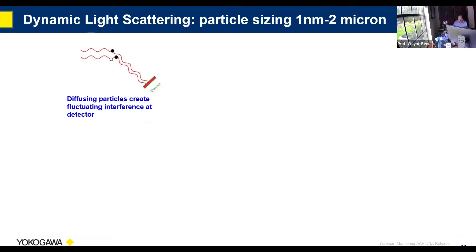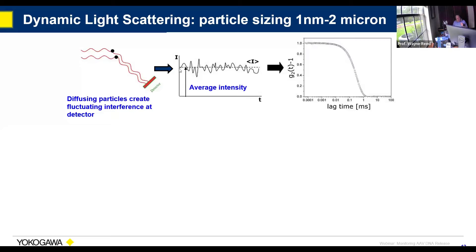With dynamic light scattering, instead of measuring intensity, we're measuring intensity fluctuations. Two scatterers at different distances from the detector will arrive with different phase shifts, producing an interference pattern. As particles diffuse about, you get a fluctuating interference pattern. What you measure is an autocorrelation function built from these intensity fluctuations. The electric field autocorrelation function has an exponential decay, where the decay constant is the diffusion coefficient D times Q squared. At very dilute concentrations with negligible interactions, you get the self-diffusion coefficient, which you can relate to hydrodynamic diameter dH via the Stokes-Einstein equation: dH = kT / (3πηD).